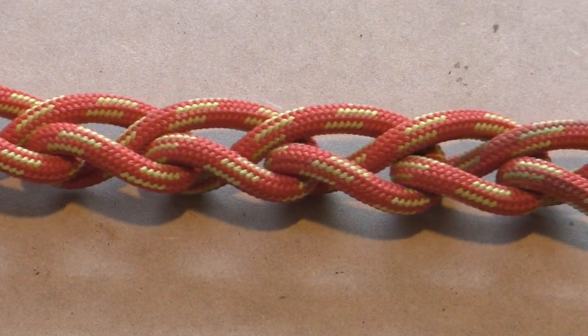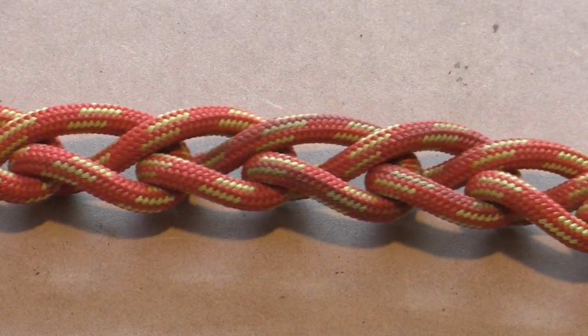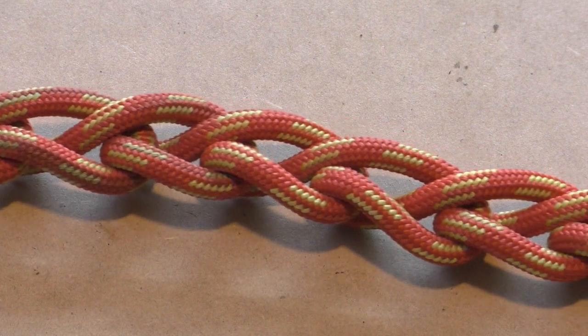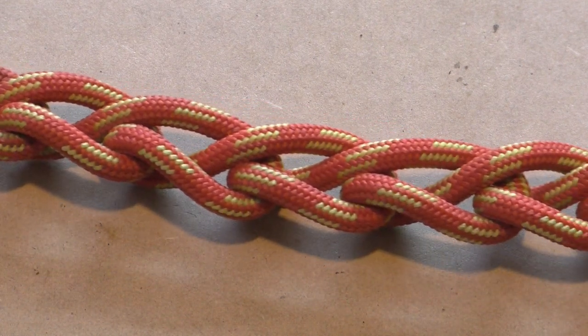The chain sinnet or daisy chain is a simple method to shorten a rope for carrying or storing without risk of tangling the rope.